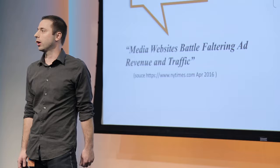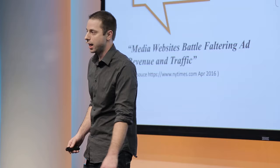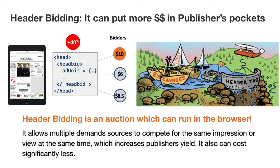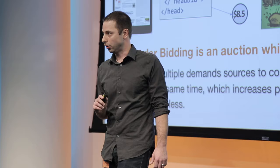What's a publisher to do when faced with declining ad revenue? They want to focus on running their business, not ad tech. Companies like Google and Facebook are interested in solving that problem for publishers — but there's a potentially undisclosed revenue share model that may not be in the publisher's best interest. Enter header bidding: a way for publishers to put more money back in their pockets. It's an auction that can be run directly in the browser. With three bidders — say $10, $6, and $8.50 CPM — the top bid is picked and sent to a final ad server. More demand and more competition generally increases yield, with some publishers seeing up to 40% lift in revenue.